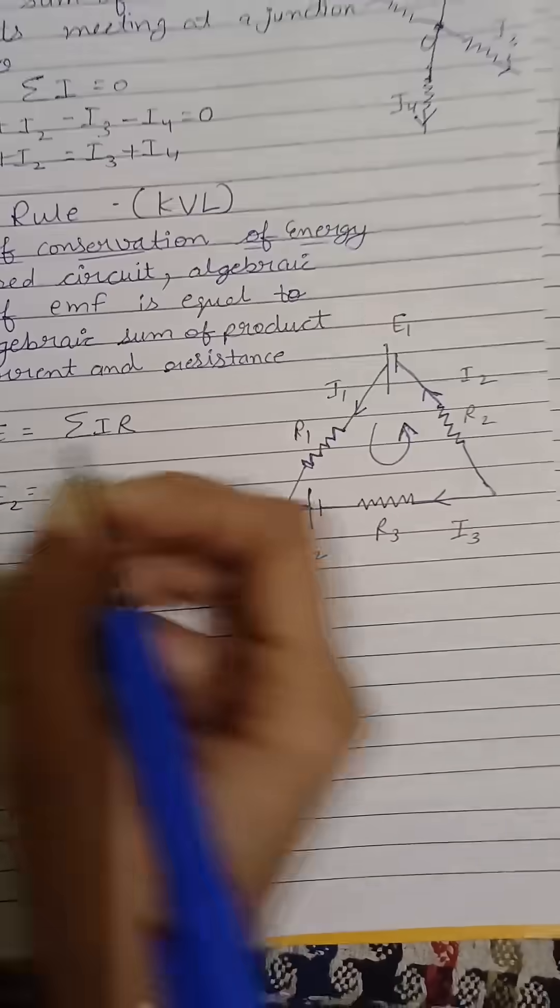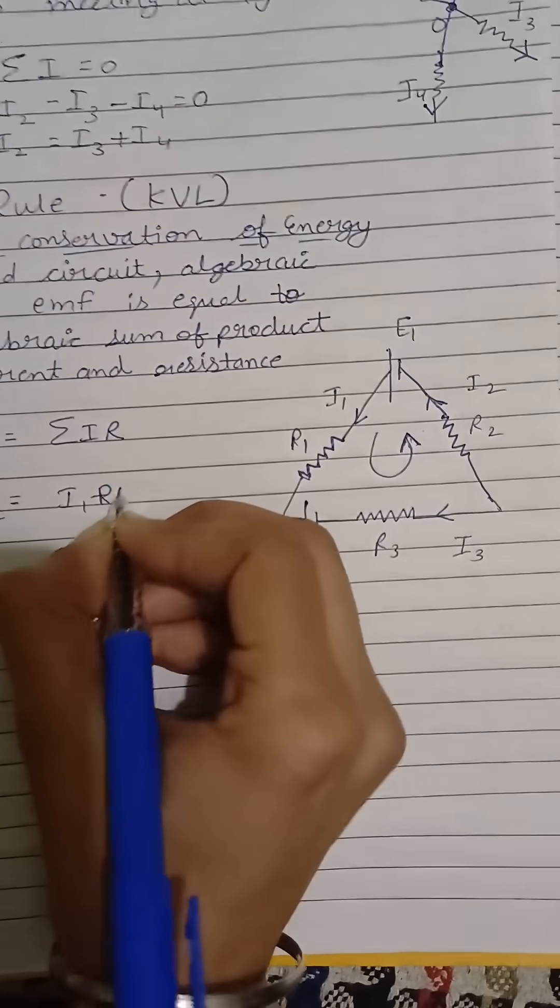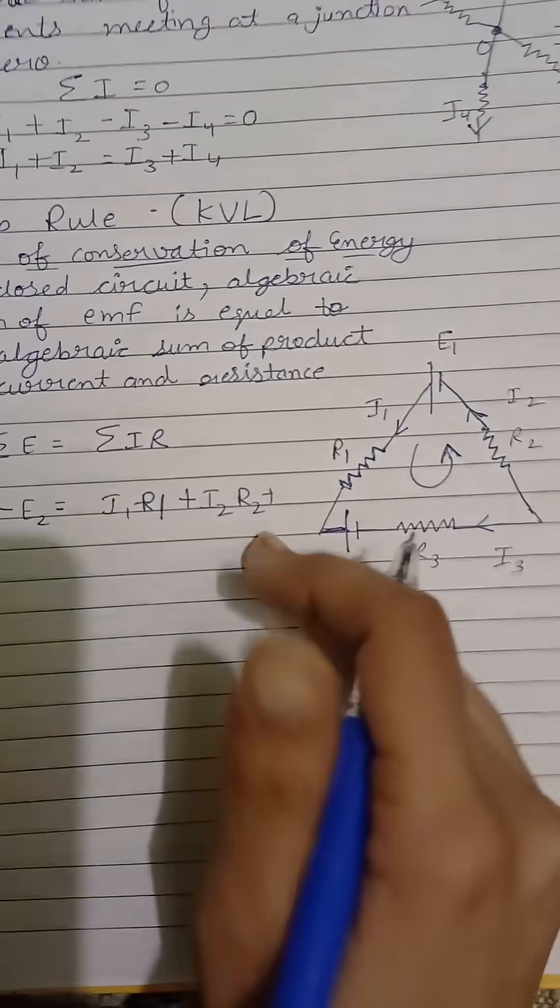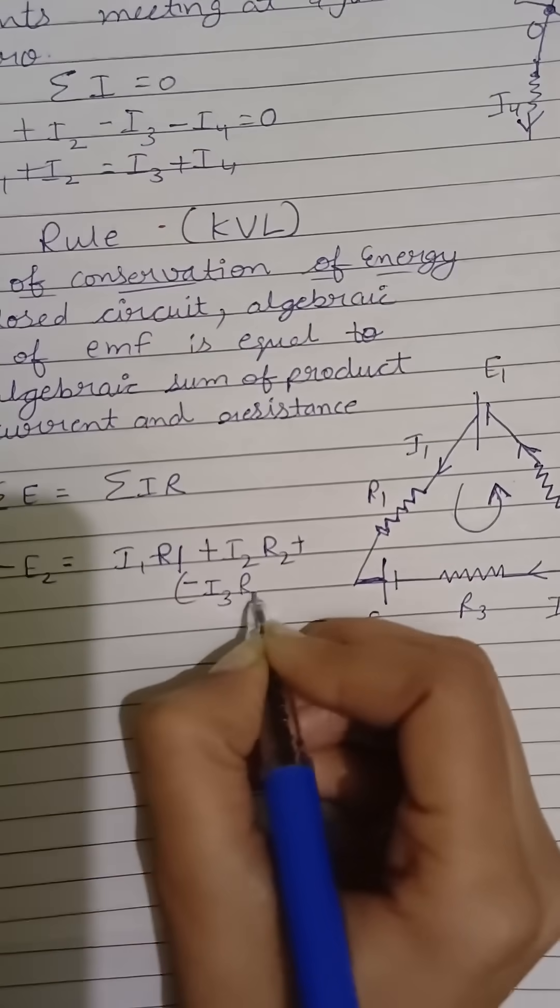E1 minus E2 equals I1 R1 plus I2 R2, because their direction is anticlockwise. But this direction is clockwise, so minus I3 R3.